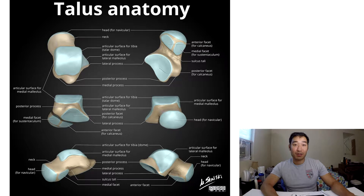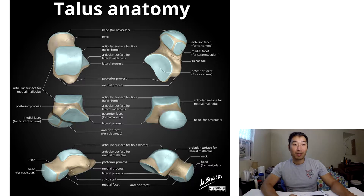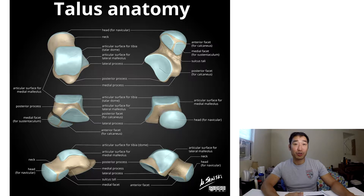It has about six to seven articular surfaces depending on where you read, and basically makes contact with other bones including the tibia, calcaneus, and navicular. It is crucial to carry out biomechanical motion when you're walking, and it moves in three planes of motion — unlike other joints where it's kind of a mono or biplane motion.